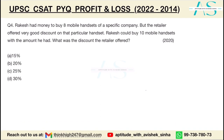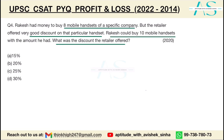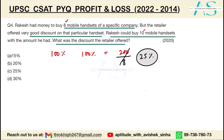Next question: Rakesh had money to buy 8 mobile handsets, but the retailer offered a discount and now he can buy 10 with the same amount. That means 2 extra handsets are effectively free. 2 free out of 8 original articles means the discount is 2/8 = 1/4 = 25 percent. Option C is correct.